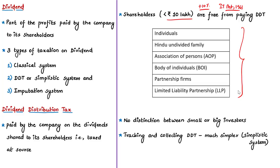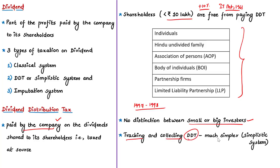This DDT method was adopted in India since 1997-98. Under DDT, there is no distinction between a small investor or a big investor — everyone is taxed at the same rate, since companies pay the DDT on behalf of investors beforehand. Because the company pays taxes, tracking dividends and collecting tax was a much simpler and painless process. This is the reason why this method is also called the simplistic system of taxing dividend.